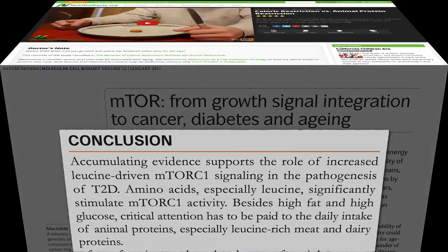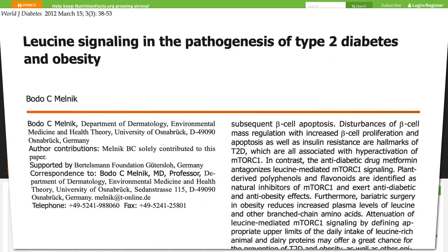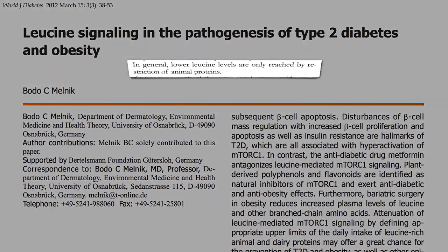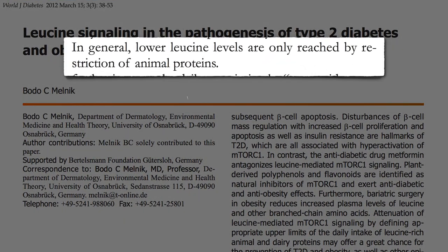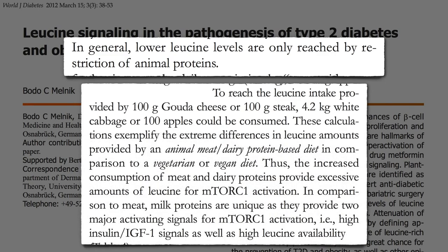In general, lower leucine levels are only really reached by the restriction of animal proteins. To reach the leucine intake provided by dairy or meat, you'd have to eat like 9 pounds of cabbage or 100 apples. These calculations exemplify the extreme differences in leucine amounts provided by a more standard diet in comparison to a more plant-based diet.